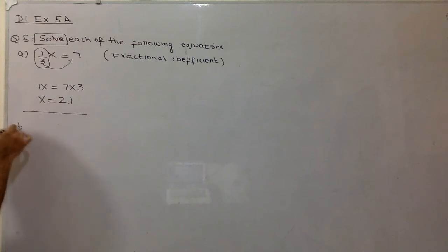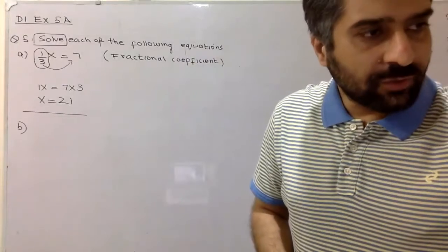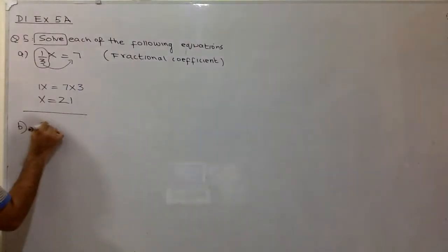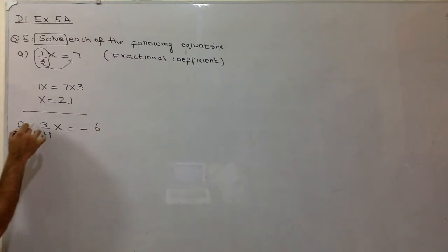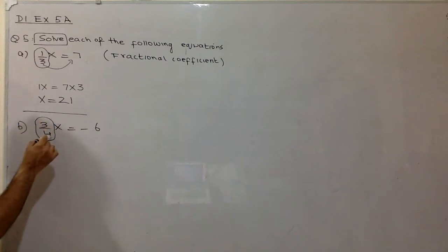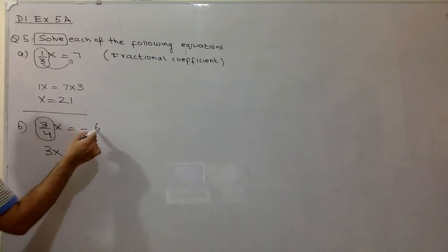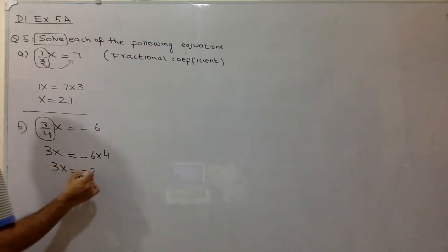This is the solution for part A. Part B is: solve 3 over 4x is equal to minus 6. Again, we have a coefficient which is a fraction. This 4 is dividing x, so you can move it to the right side. When you move it to the right side, this 4 will be multiplied by minus 6, giving you 3x equal to minus 24.